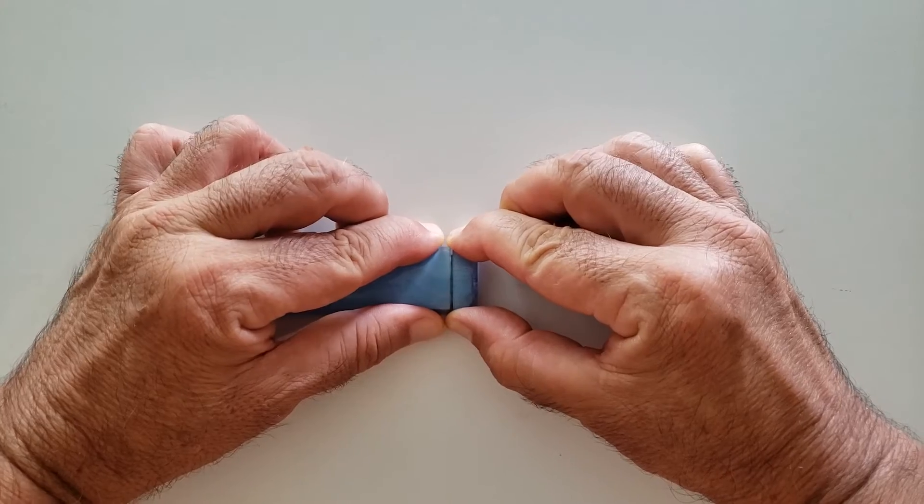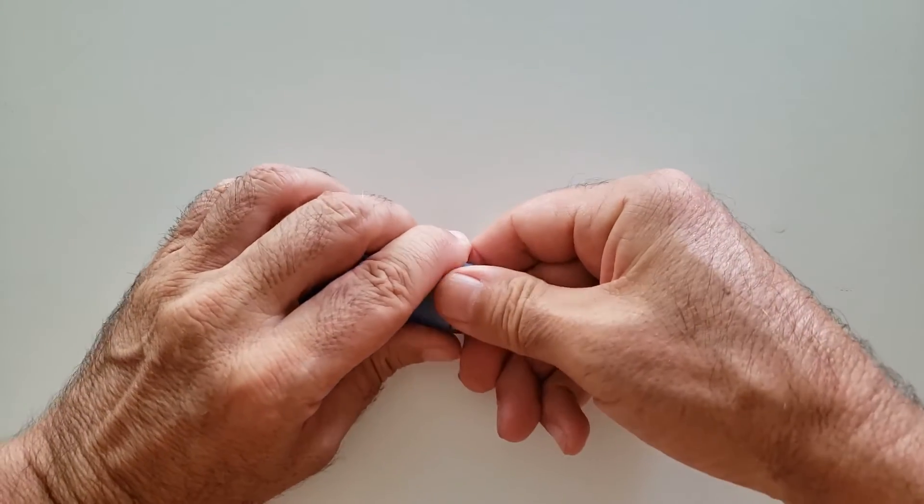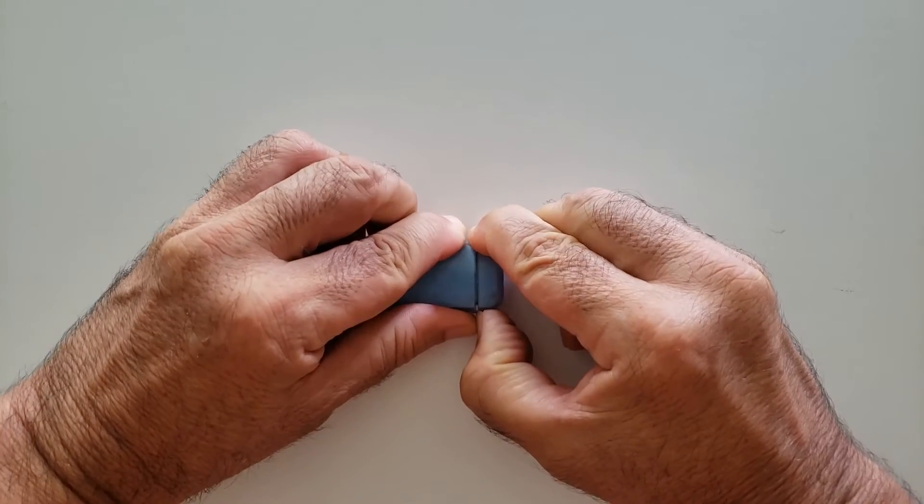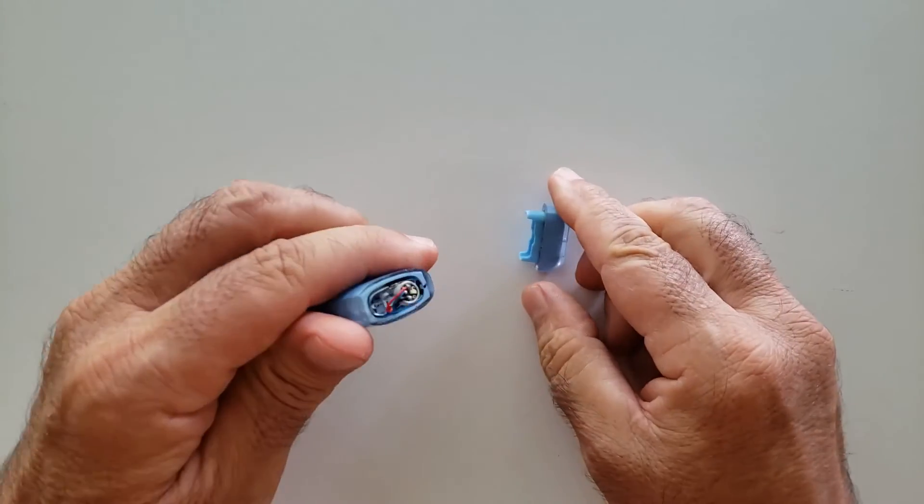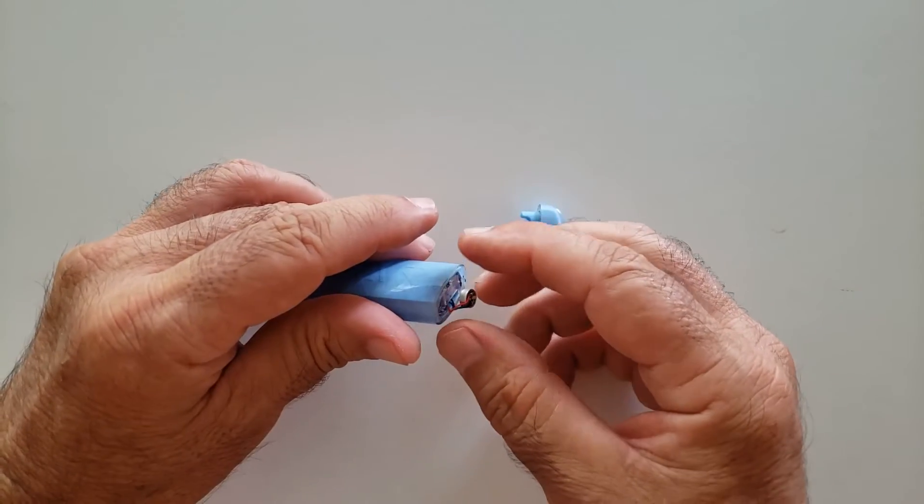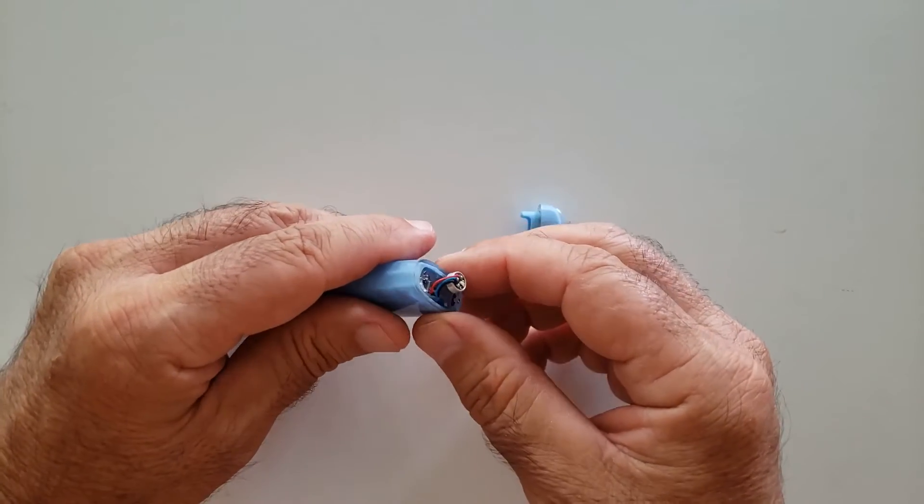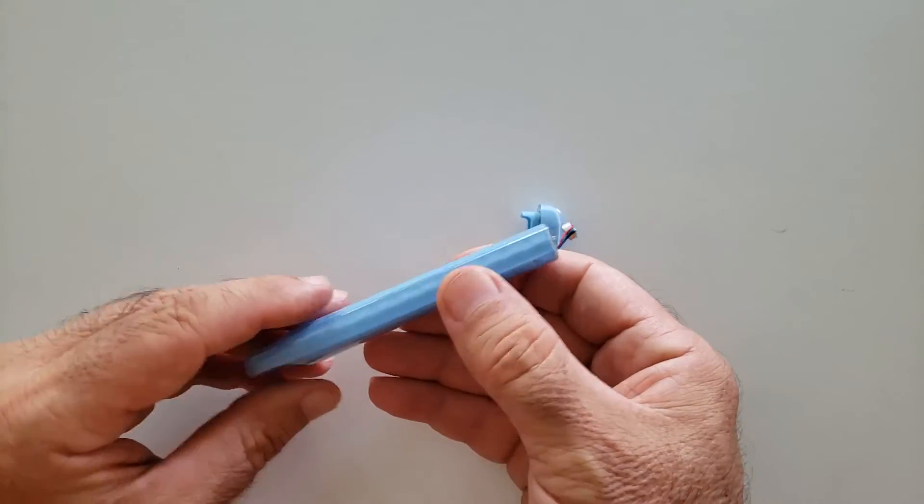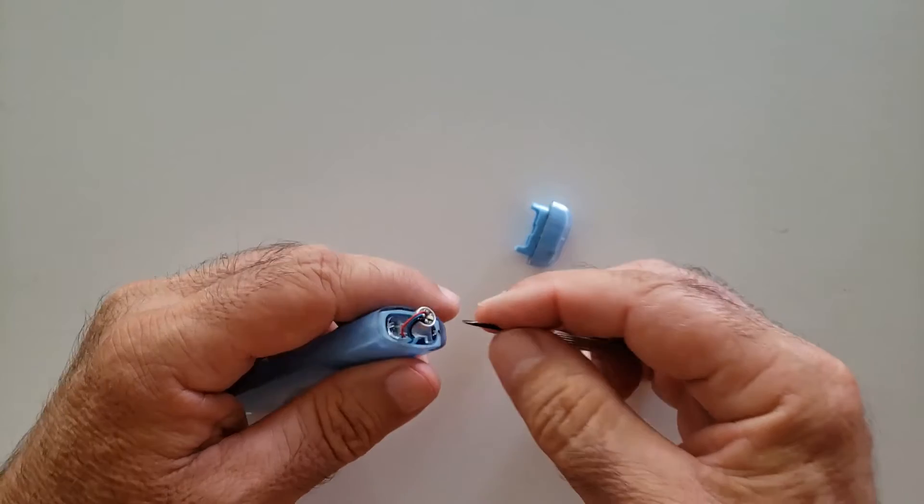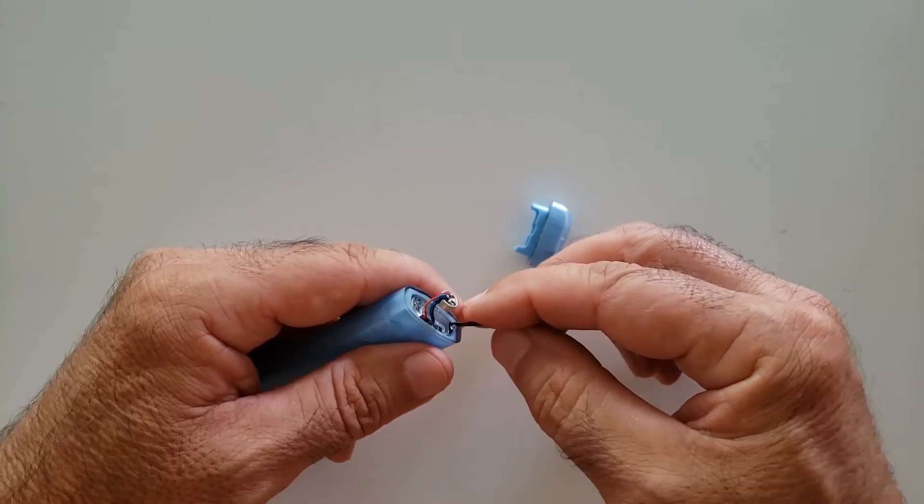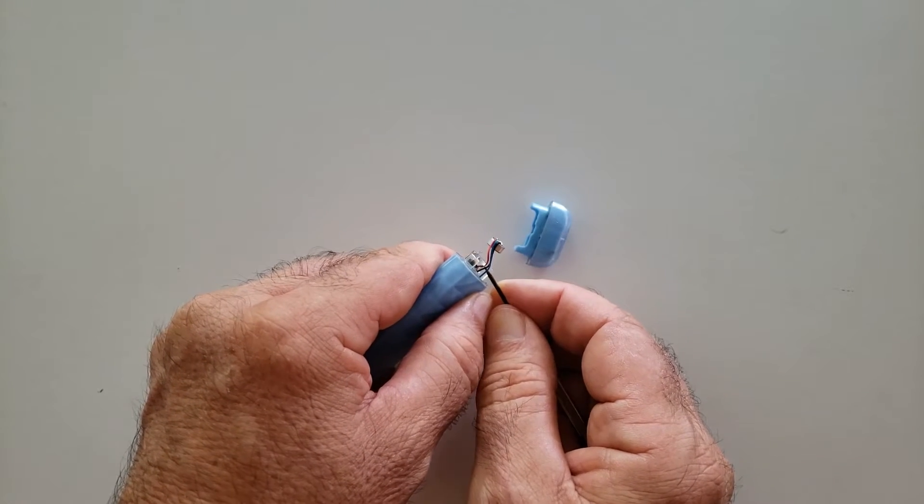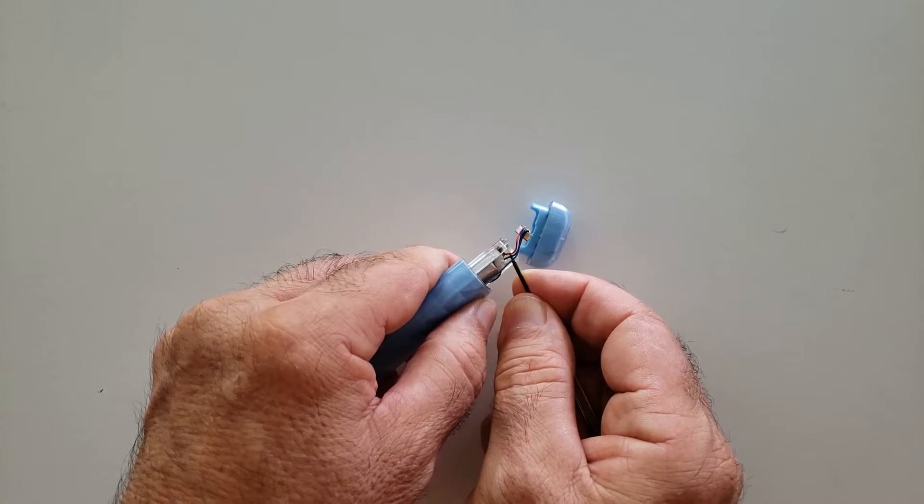is we just pull this out. This is the little LED that lights up and kind of backlights the smoke as it comes out. This comes out all as one unit just like this.